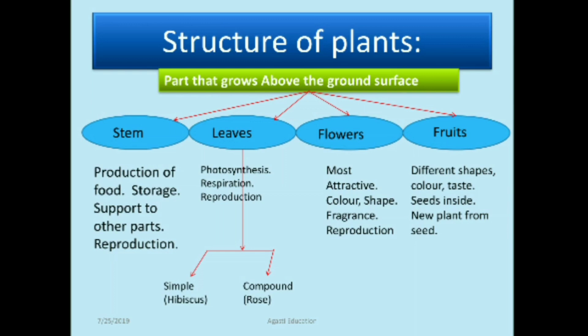The next part is leaves. The photosynthesis process happens in leaves, and reproduction also occurs in leaves. There are two types of leaves — simple leaves and compound leaves.